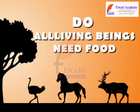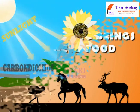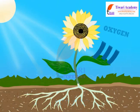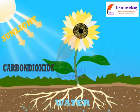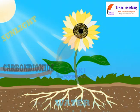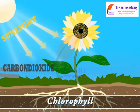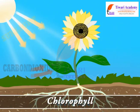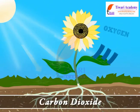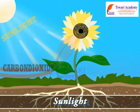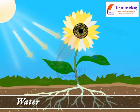Do all living beings need food? Plants make their own food by the process of photosynthesis with the help of chlorophyll, carbon dioxide, sunlight, and water.